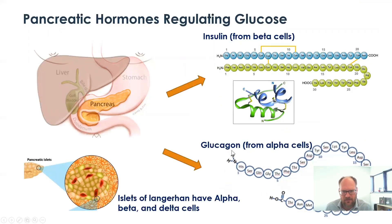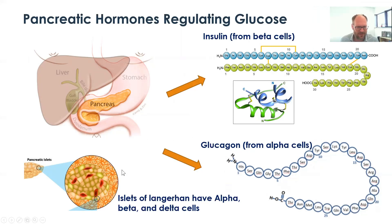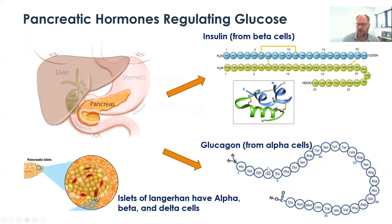Insulin and glucagon are both peptide hormones synthesized in specialized parts of the pancreas called the islets of Langerhans. These islets look like little clumps or balls of cells inside the pancreas and contain a variety of cell types — alpha, beta, and delta cells — each with a defined function. The beta cells make insulin, which is used to signal high glucose. Glucagon is made by the alpha cells and signals low glucose to the body.